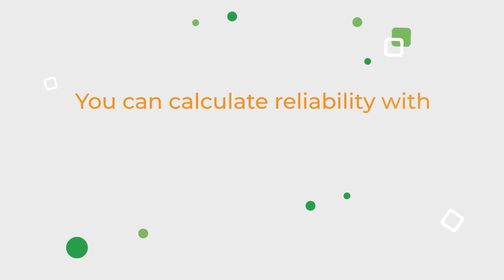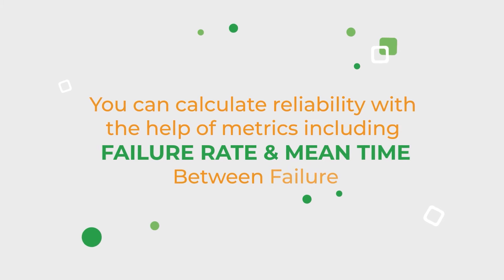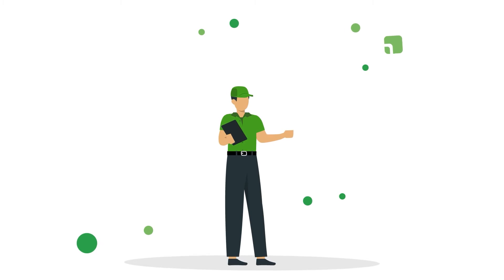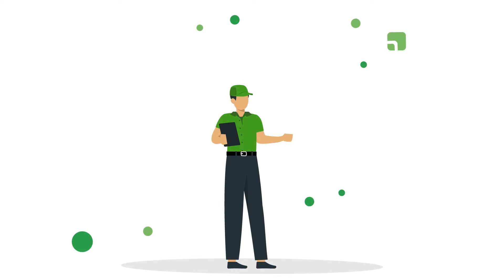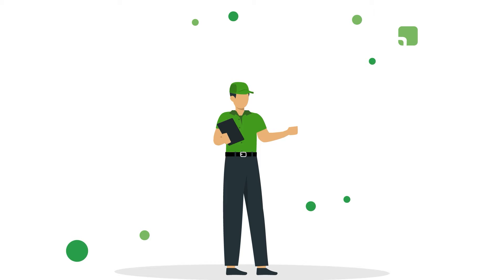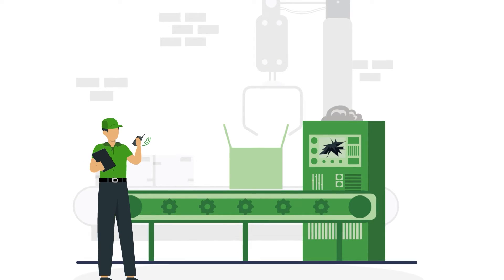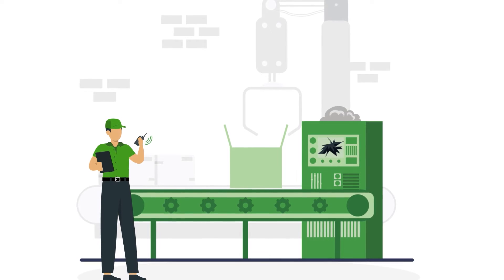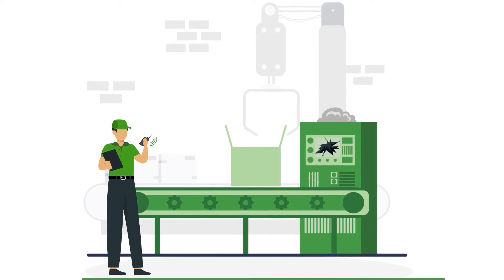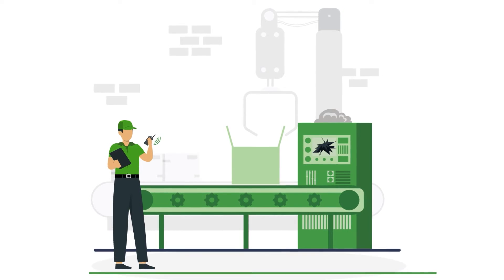You can calculate reliability with the help of metrics including failure rate and mean time between failure. MTBF tells you how long a repairable asset typically operates before experiencing a failure — the longer a machine operates without failing, the more reliable it is. Other methods include failure modes and effects analysis for calculating risks and predicting the likelihood of equipment failure, and fault trees for tracing issues to their root causes.